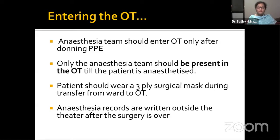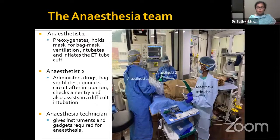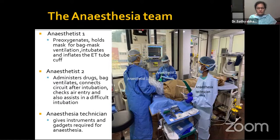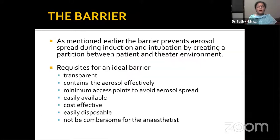The anesthesia team comprises only three members: the first anesthetist pre-oxygenates, holds the mask for bag-mask ventilation, intubates, and inflates the endotracheal tube cuff; the second anesthetist administers drugs, bag ventilates, connects the circuit after intubation, checks air entry, and assists in difficult intubation; and the anesthesia technician gives instruments and gadgets required for anesthesia. The barrier prevents aerosol spread during induction and intubation by creating a partition between the patient and the theater environment.